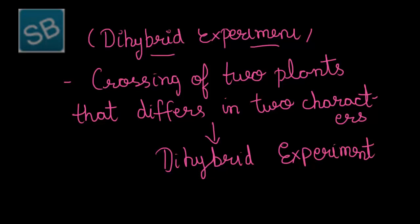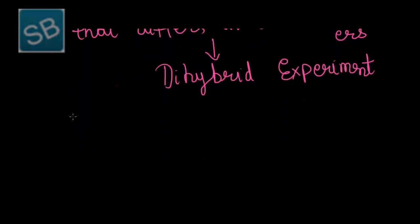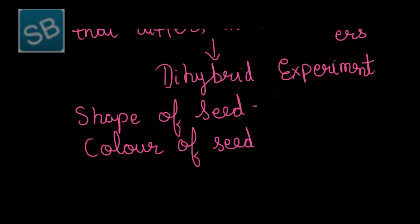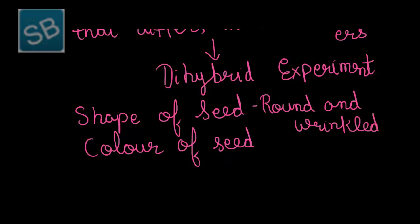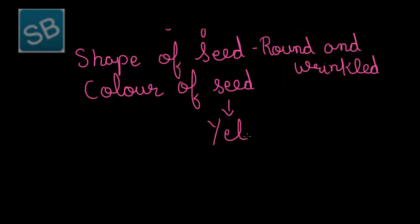In order to study the inheritance of two genes, Mendel chose two characters: the shape of the seed and the colour of the seed. In case of shape, he chose round and wrinkled. While in case of colour, the two types were yellow and green.